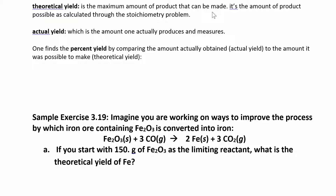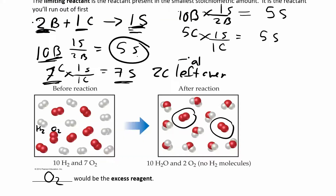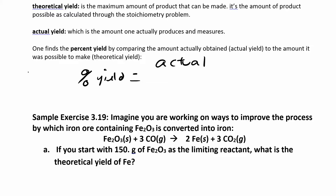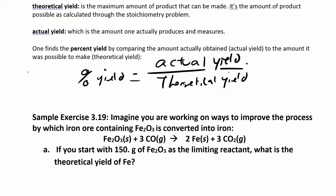The theoretical yield is always going to be more than what you actually get when you run the reaction. The actual yield is what you actually make, so the actual yield is always less than the theoretical yield. The theoretical yield is the maximum amount of product you make. Your percent yield is calculated as the actual yield divided by the theoretical yield times 100.